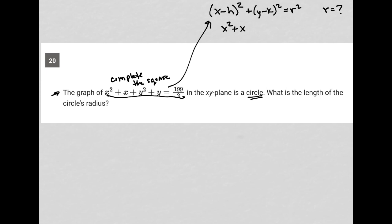For x² + x, how do I complete the square? I take half of the middle term—the coefficient in front of x is 1, half of 1 is 1/2, then I square that and add it. So (1/2)² is 1/4, so it gets added here. But because I've added it to the left side, I have to also add it on the right side. So 1/4.